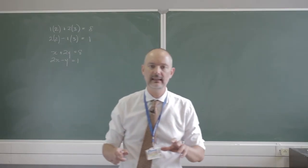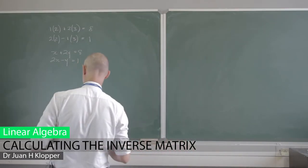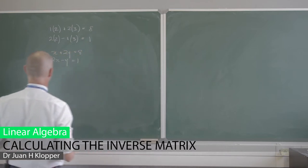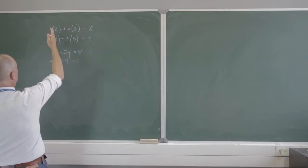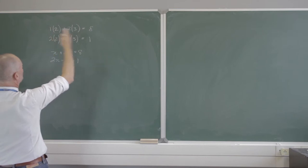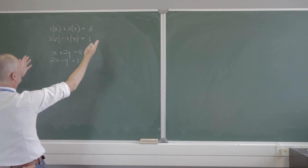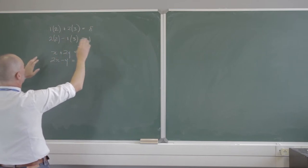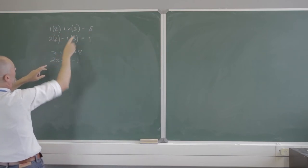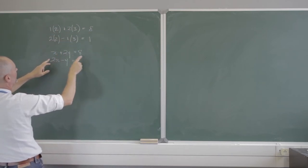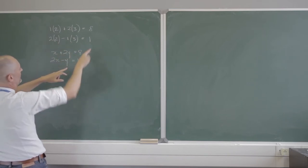Now let's use these inverses to solve a system of linear equations. I'm going to cheat again — I'm going to choose my x to be 2, my y is 3. I have 2 unknowns, 2 equations, and you can see the solution. So I translate that into: 1 times x plus 2 times y equals 8, and 2 times x minus y equals 1.